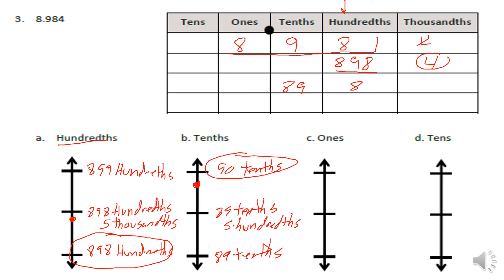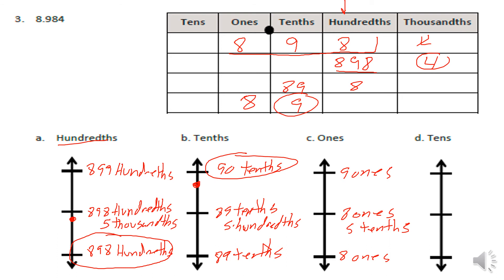Now coming to the ones place, we have eight ones and nine tenths. The bottom is eight ones, the top is nine ones, and the center is eight ones and five tenths. Since we have nine tenths in our number and nine tenths is above the center of five tenths, we round to nine ones.